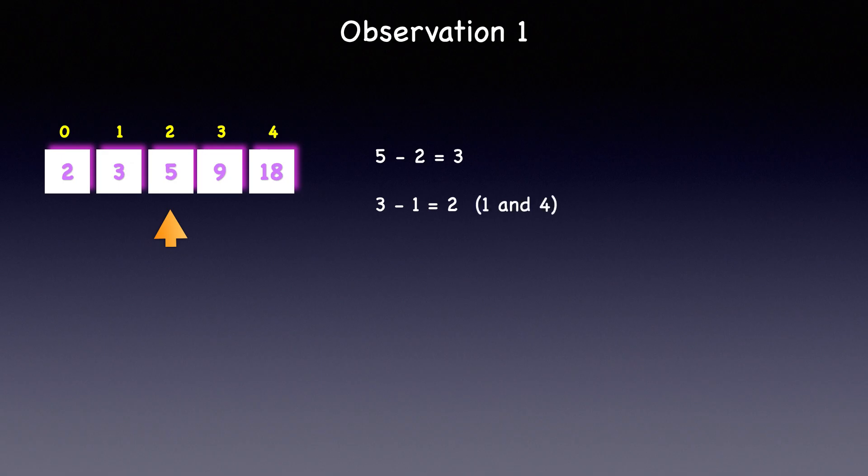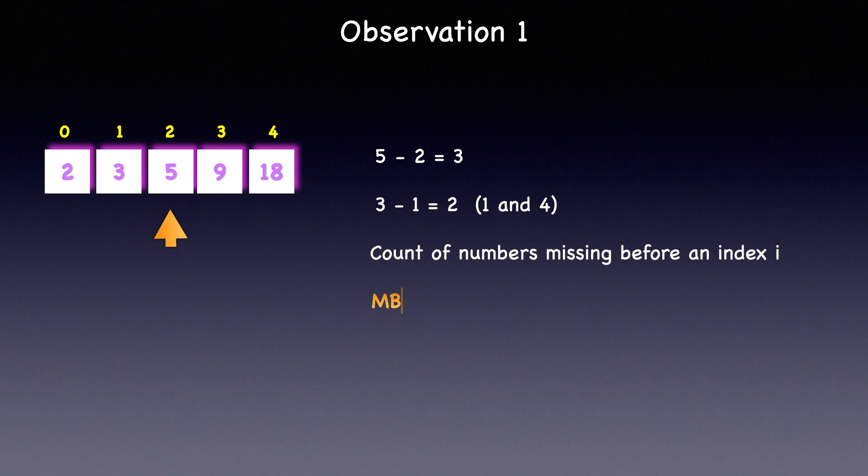So, let's derive a formula to find the count of numbers missing before an index i. Let's say MB_i, which stands for missing before i, is equal to arr[i] - i - 1. So, the first observation is that given a sorted array with missing numbers, we can always find the count of numbers missing before any index using this formula. As the next step, let's see how we can use this observation to our advantage.